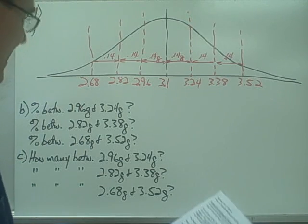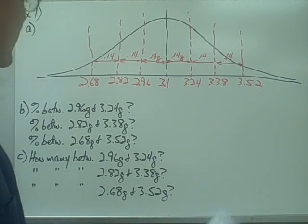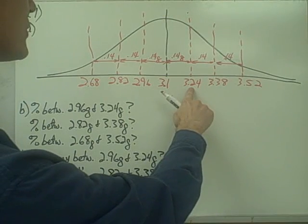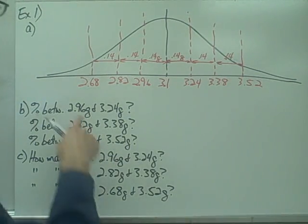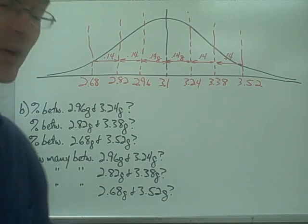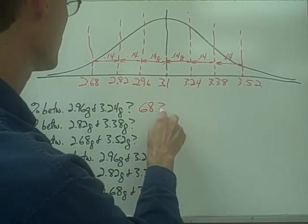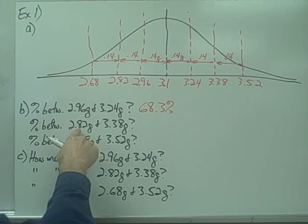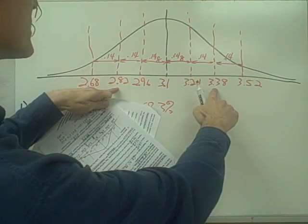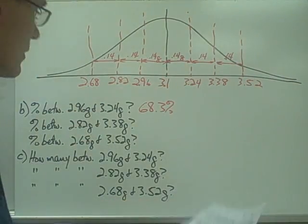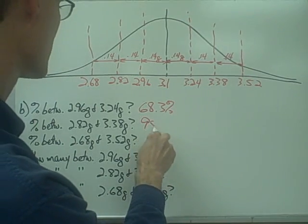Part B: What percent of the pennies will have a weight between 2.96 grams and 3.24 grams? I can see that 2.96 and 3.24 grams represent one standard deviation above and below the mean, so according to the empirical rule, that's 68.3%. What percent lie between 2.82 and 3.38 grams? Those values represent two standard deviations above and below the mean, so according to the empirical rule, that's 95.5%.